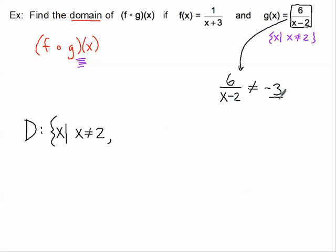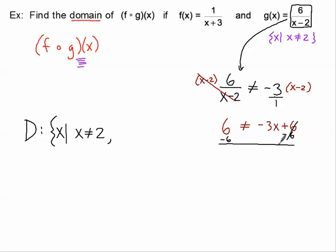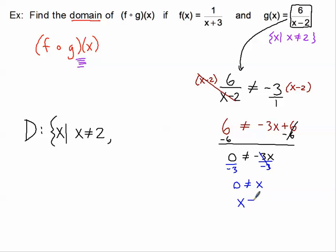Let's solve this equation. I'll put g of x over 1 and multiply by x minus 2 to eliminate the denominator, giving me 6 on the left. Setting g of x not equal to negative 3: negative 3 times x minus 2 gives negative 3x plus 6. Subtracting 6 from both sides gives 0. Dividing by negative 3, I get x is not equal to 0. That is the last restriction — x cannot be equal to 0 as well, and now I have my domain.